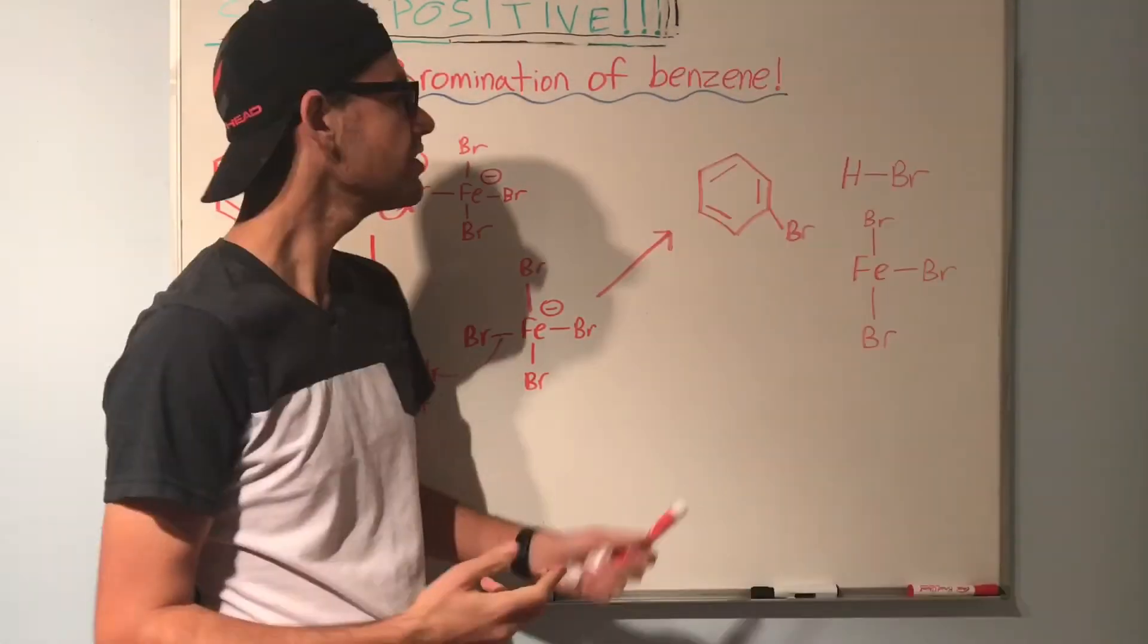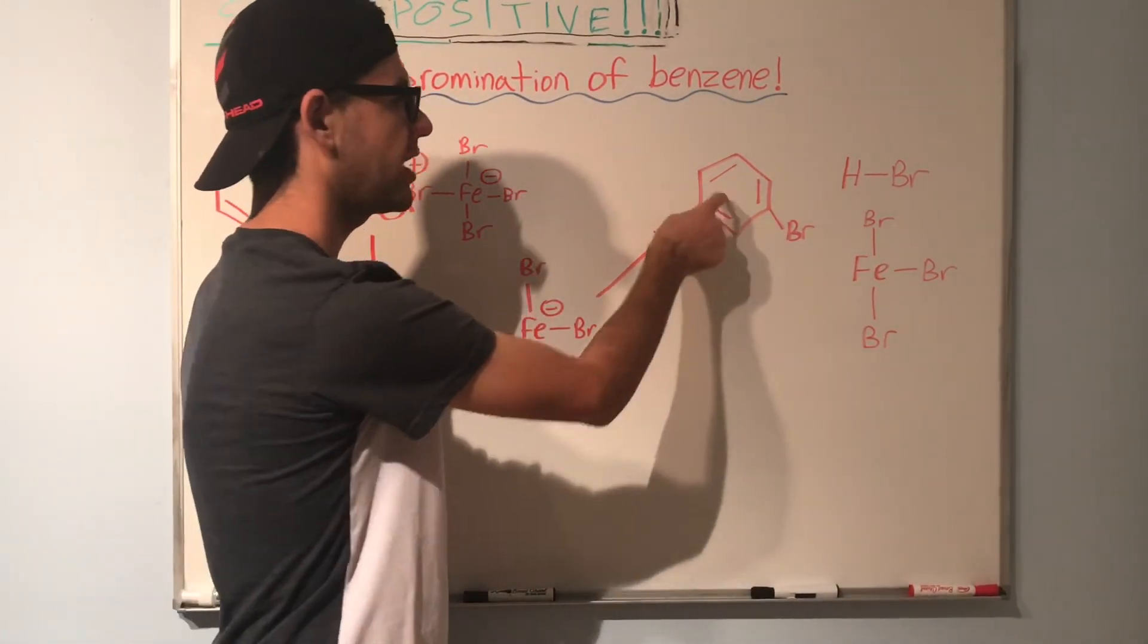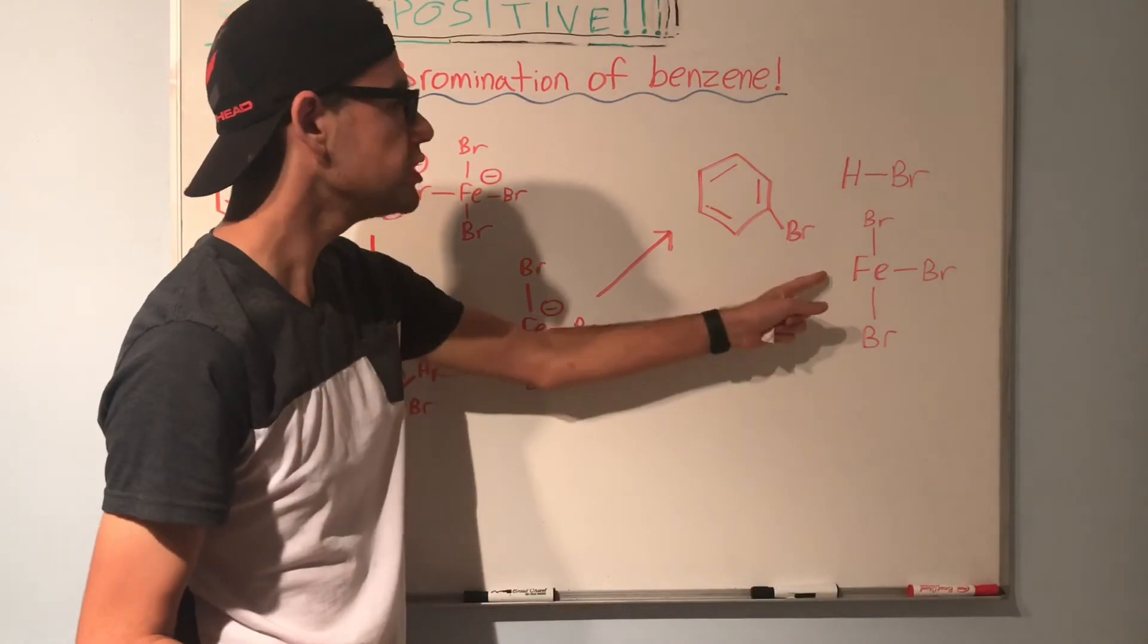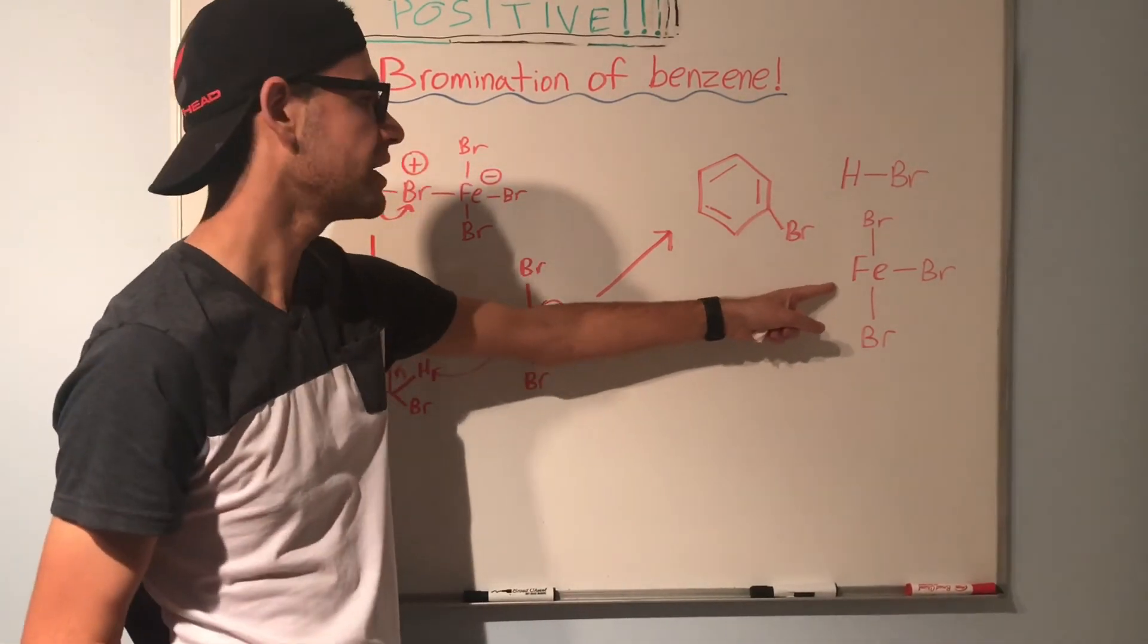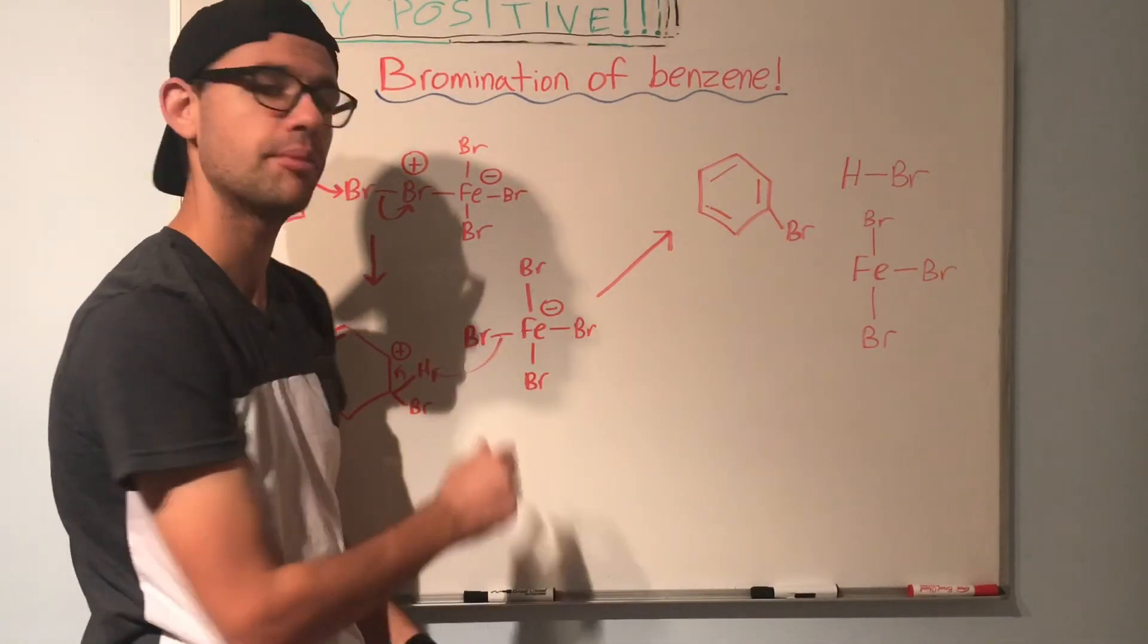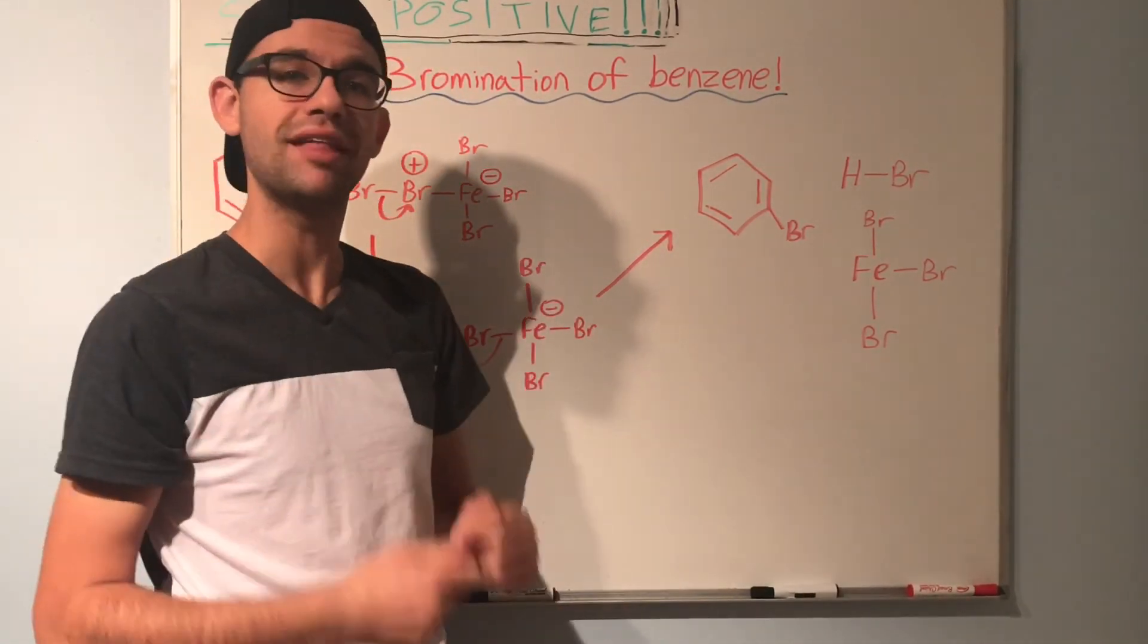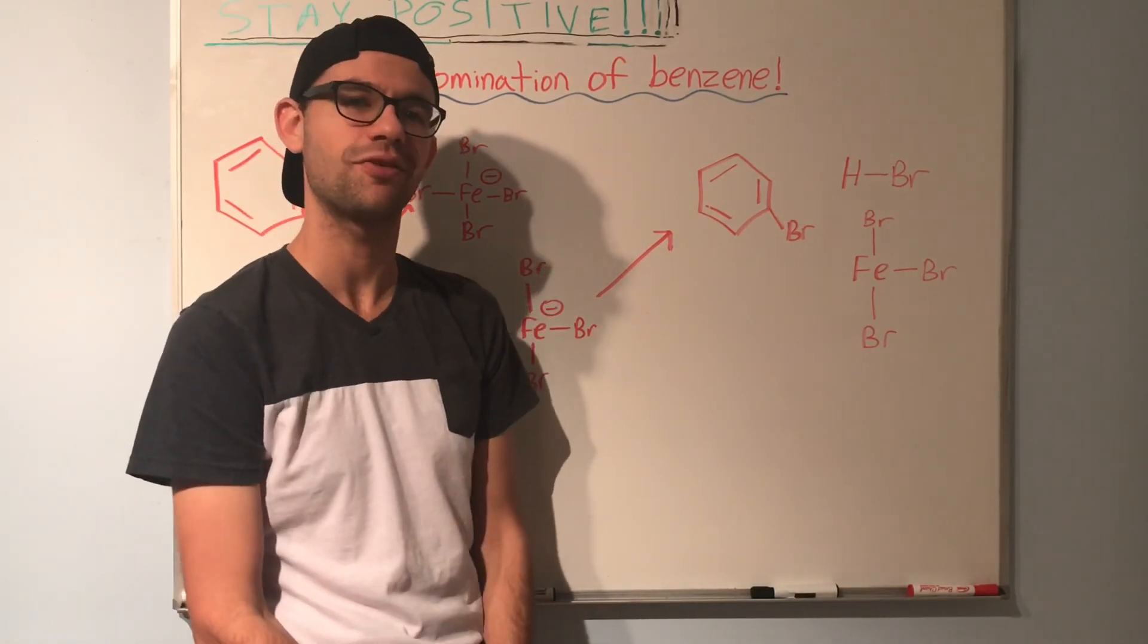Our products will look like this. Notice that now we have our restored aromaticity, we have our Br coming off of the benzene ring, we've regenerated our catalyst, our iron bromide catalyst, and we formed some HBr from this deprotonation step. So that's how we add a Br to a benzene ring. I hope that was helpful, and thanks for watching.